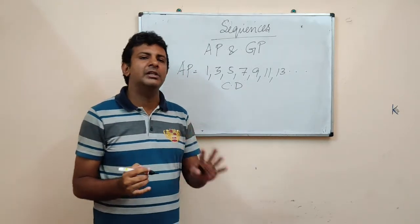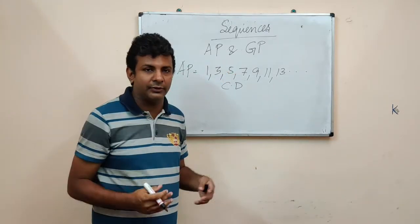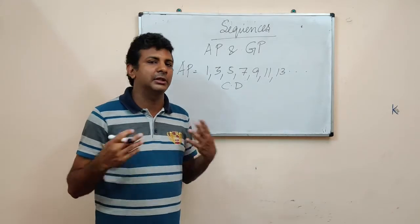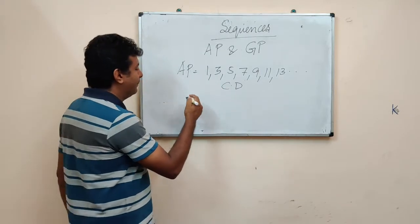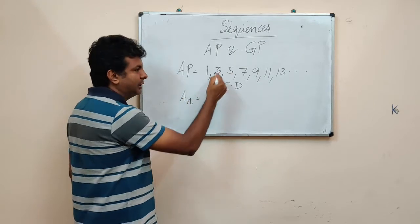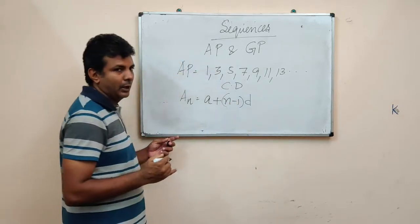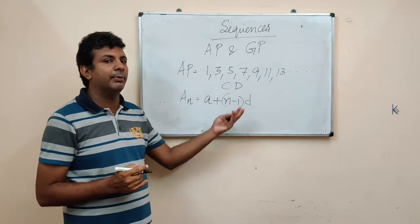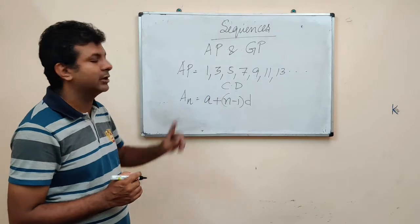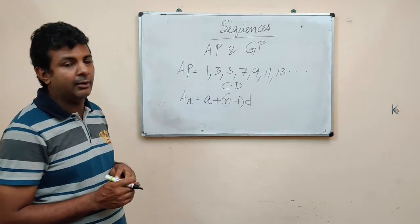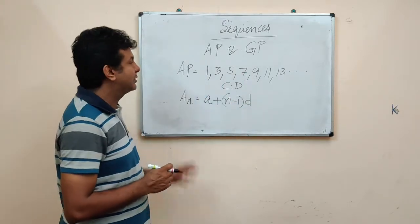Now there are two things in any sequence that we are excited about. It is about the nth term — what will be the fifth term of the sequence, what will be the tenth term of the sequence, etc. In case of an AP or arithmetic progression, the nth term AN is equal to A plus (n minus 1) into D. A is the first number and n is the nth number that you have to find out.